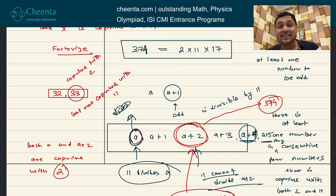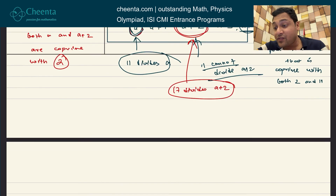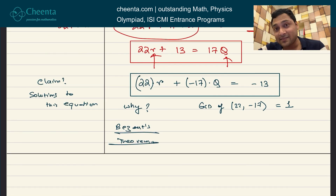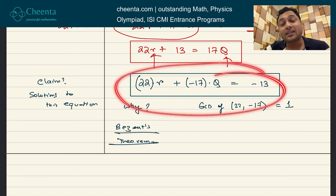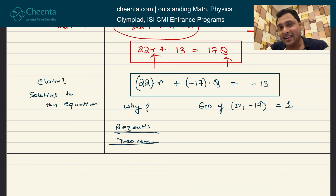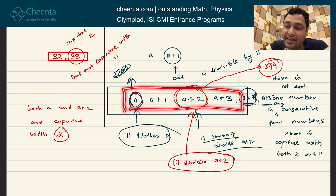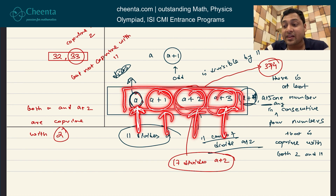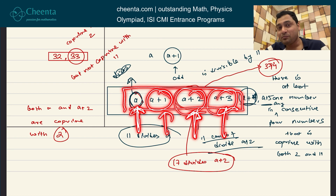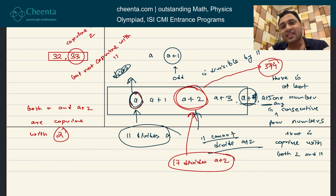Number theory can be really exciting — check the links in the description for more resources. As a challenge: can you find actual integer solutions where A is odd, A+1 even, A+2 odd, A+3 even, A divisible by 11, and A+2 divisible by 17? There are infinitely many such examples — put your answer in the comments. Thank you for watching, keep on doing great mathematics, and I will see you in the next one.